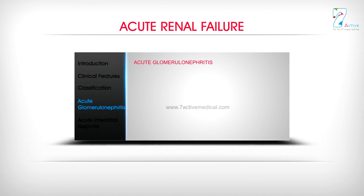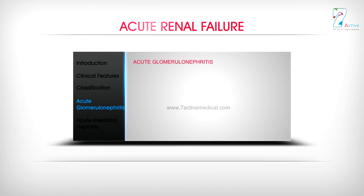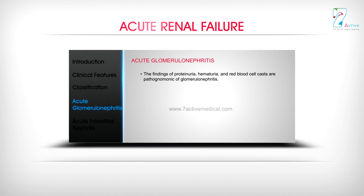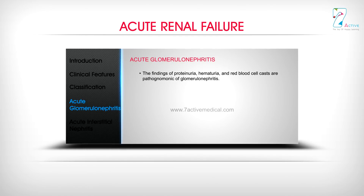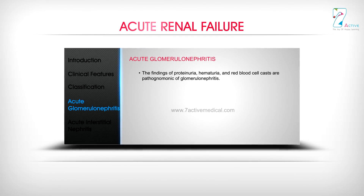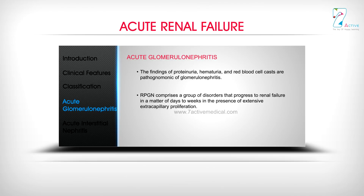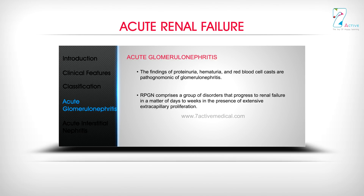Acute Glomerulonephritis: The findings of proteinuria, hematuria, and red blood cell casts are pathognomonic of glomerulonephritis. Rapidly Progressive Glomerulonephritis (RPGN) comprises a group of disorders that progress to renal failure in a matter of days to weeks in the presence of extensive extracapillary proliferation.